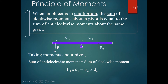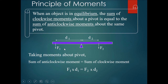For the seesaw to be exactly balanced — neither side going up or down — the total anticlockwise moments must exactly equal the total clockwise moments. That means the total anticlockwise turning effects equal the total clockwise turning effects. So if you don't want the seesaw to tip, F1 times d1 (the anticlockwise moments) must equal F2 times d2 (the clockwise moments).